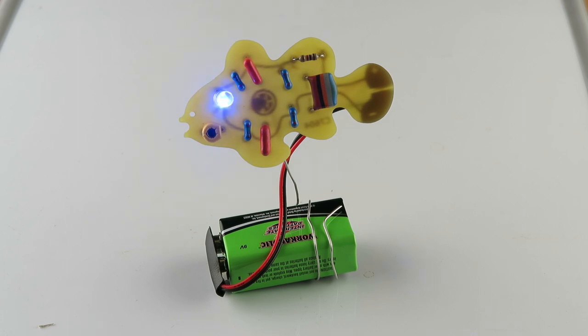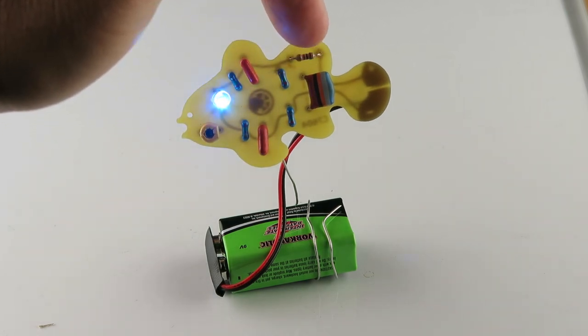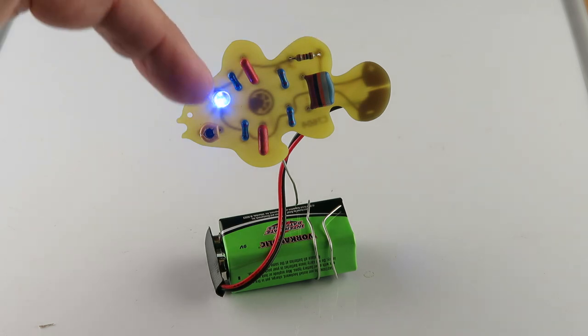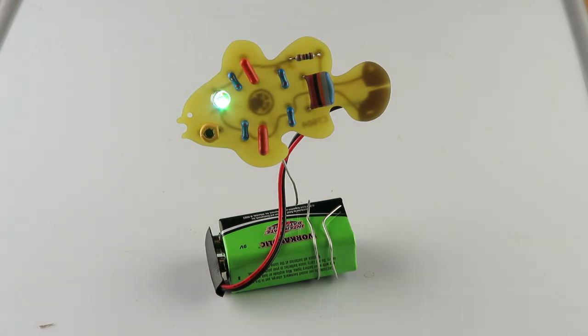After you get done soldering those, the ones that are critical are the resistor here and the polarity on this flashing LED.